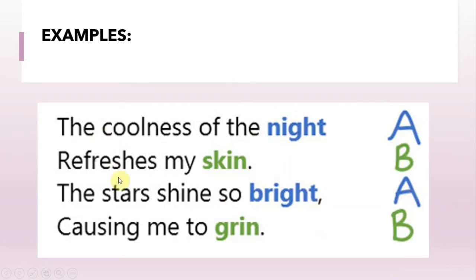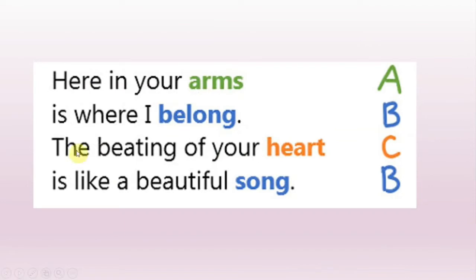On the second stanza of this poem, I will probably find the same rhyme scheme: 'Here in your arms is where I belong. The beating of your heart is like a beautiful song.' In this case, 'belong' and 'song' are the rhyming words. According to the lines, this is A for 'arms,' B for 'belong' and 'song,' and C for 'heart.' I will probably find a rhyming word for 'arms' in the next stanza.